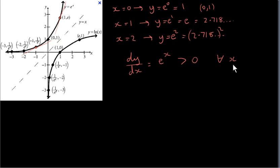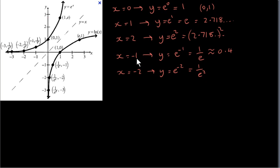The derivative is always positive for all values of x. Even if x is negative — if x is minus 1, e to the power of minus 1 is just 1 over e to the power of plus 1, which is a positive number because e is a positive number, e is 2.7. If x equals minus 1, we have y equals e to the power of minus 1, which is approximately 0.4. So we go to minus 1 on the x-axis and up to about 0.4.